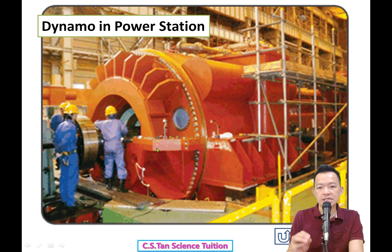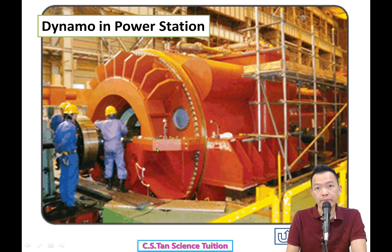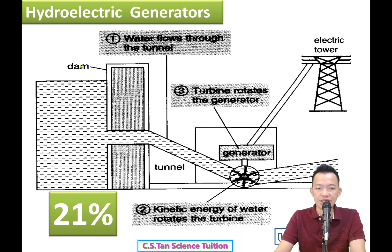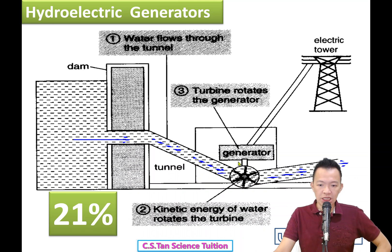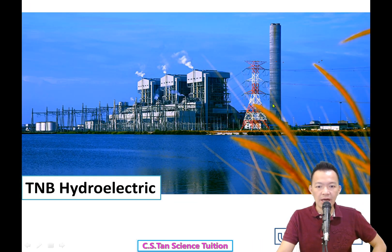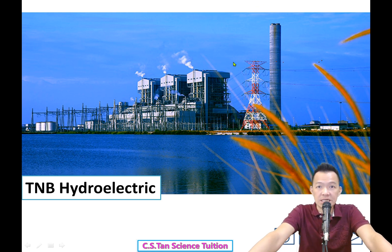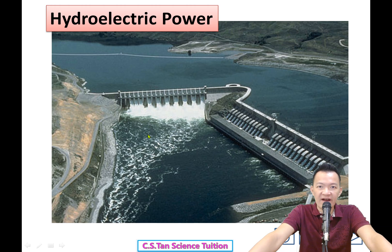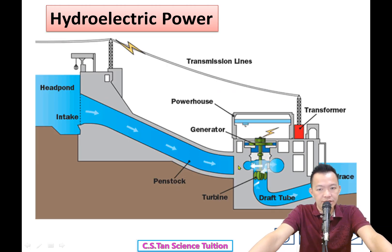Thermal power stations are the most common in Malaysia - more than fifty percent, maybe sixty or seventy percent 超过一半. Next is hydroelectric power 水力发电. Water falling from a high place has potential energy and kinetic energy 位能加动能. The falling water turns the dynamo 转动发电器, which generates electricity. Examples in Malaysia include Bakun Dam in Sarawak and other locations.